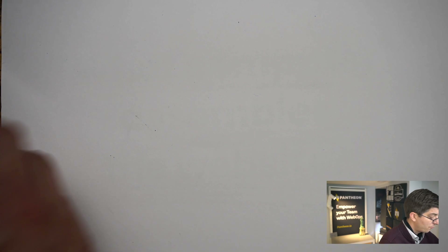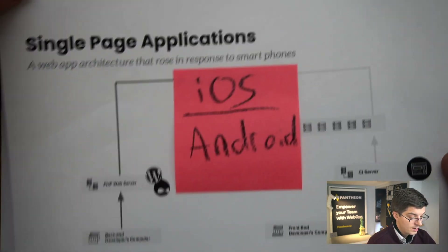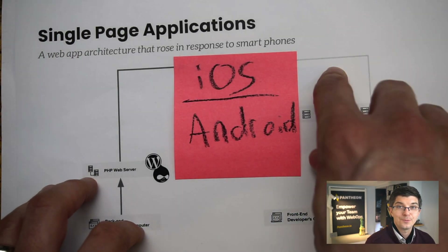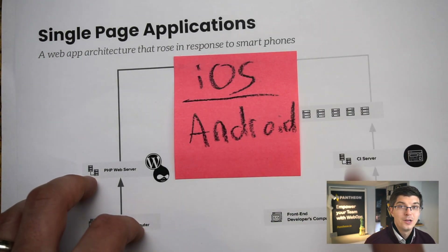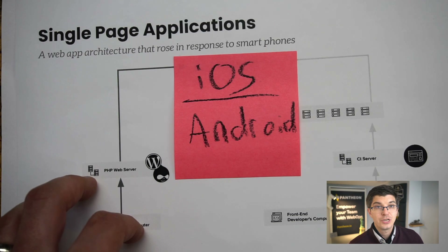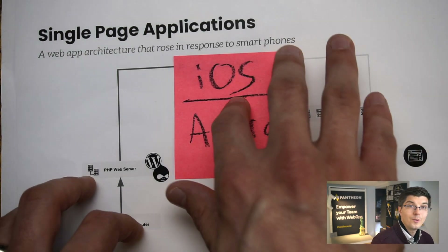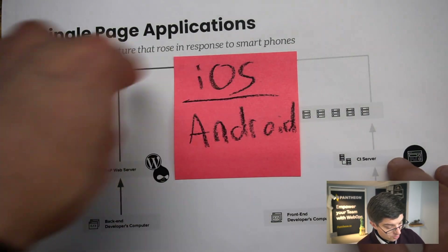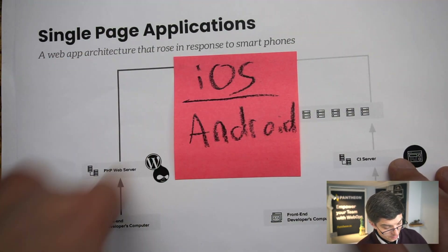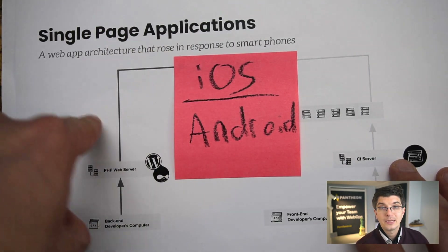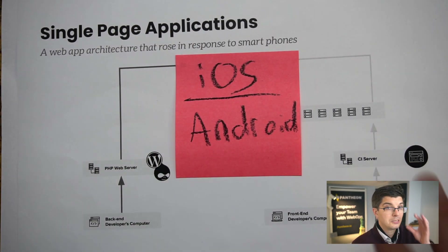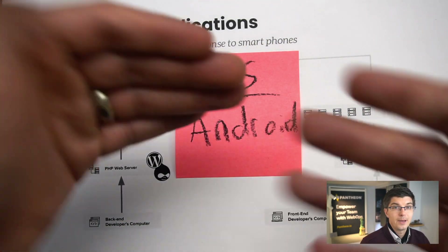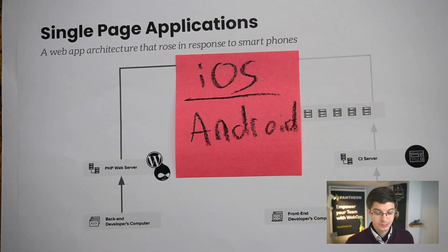we're going to take our front-end code and move it through a different deployment pipeline. We'll send a bunch of JavaScript to these awesome iOS and Android devices. They can load content from your CMS APIs — that'll be great. Client-side rendering of single-page applications.